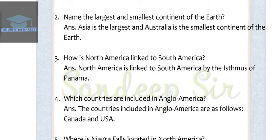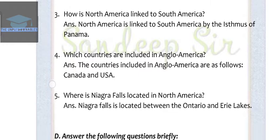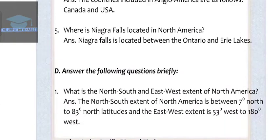Question 4: Which countries are included in Anglo-America? The answer is the countries included in Anglo-America are Canada and USA. Question 5: Where is Niagara Falls located in North America? The answer is Niagara Falls is located between the Ontario and Erie lakes.